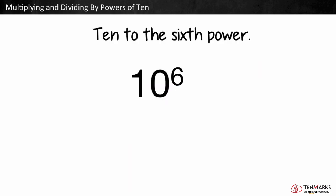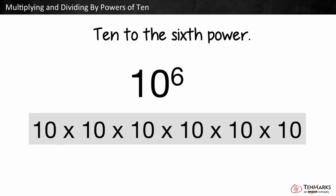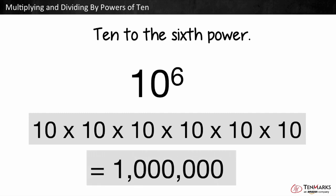This is 10 to the sixth power. We can write this as a multiplication sentence: 10 to the sixth power is equal to 10 times 10 times 10 times 10 times 10 times 10. We multiply 10 six times, and this is equal to 1 million.